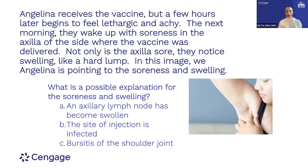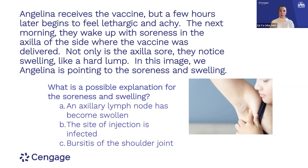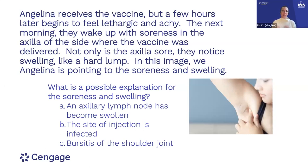The next morning, they wake up with soreness in the axilla of the side where the vaccine was delivered — not only sore but swollen like a hard lump. I provided an image to indicate approximately where. What could we use as an explanation? Students typically have an understanding of a lymph node being part of a response. If you don't offer sore pec minor as an option, they might get to the idea that the local lymph node is swelling — and then we can talk about that.